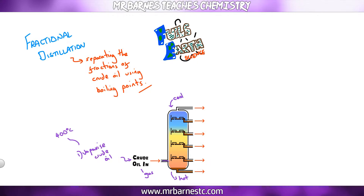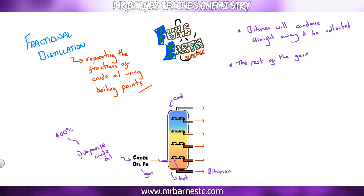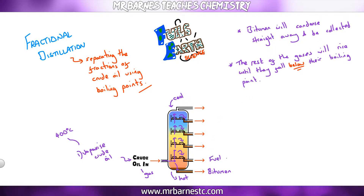When the gas enters, bitumen condenses straight away and turns back into a liquid so it can be collected. Everything else stays as a gas and rises until it falls below its boiling point, at which point it condenses back into a liquid and can be collected. The order going up is: fuel oil, diesel, kerosene, petrol, and then gases remaining at the top.